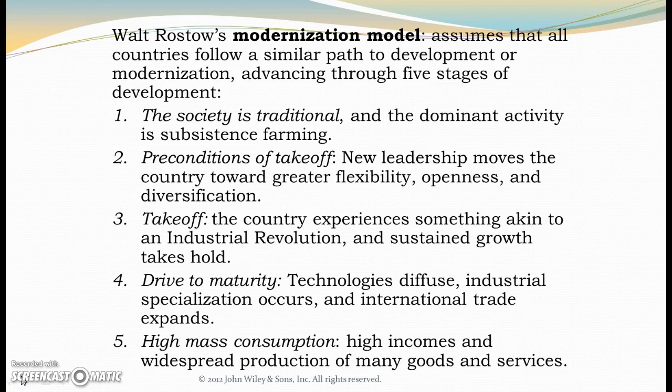Once you go forward, you don't go back — this is a very forward-looking model. Stage one: society is traditional, with the dominant activity being subsistence farming. That means roughly 85–90% of people are engaged in farming solely to support their own families, with a handful doing other things. In Europe and North America, we see this up until about 1750–1800; in the United States, all the way until about 1850.